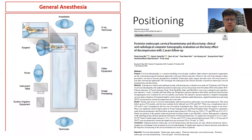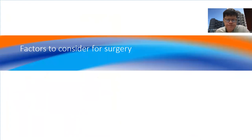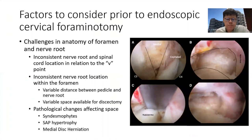In terms of positioning, the C-arm is located at the head and the video monitor is just more distal to the C-arm. The surgeon will stand on the same side of the lesion for uniportal, and occasionally biportal will stand on the opposite side. It is important to know the cervical endoscopic foraminotomy anatomy — there are some challenges as the nerve root location can be quite inconsistent, and the spinal cord location in relation to the V-point is also inconsistent.